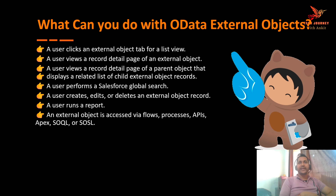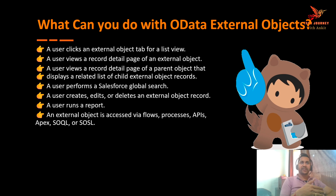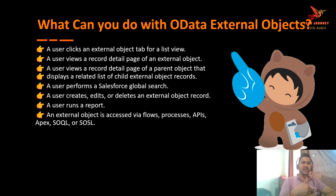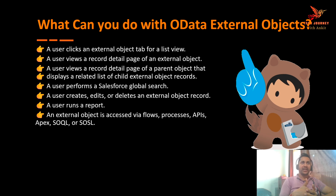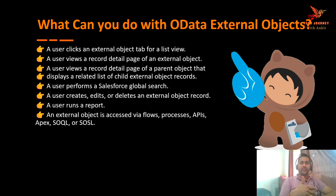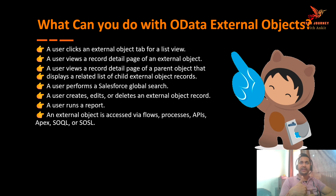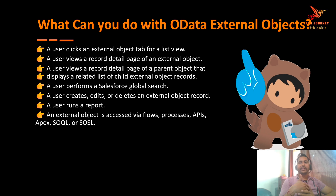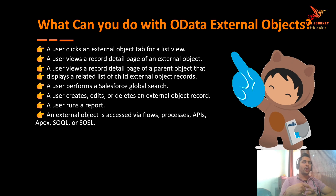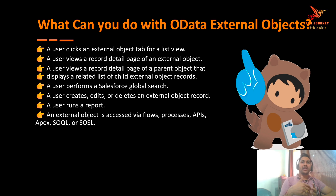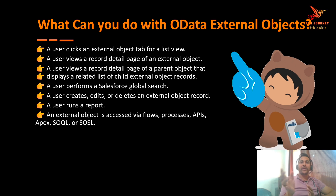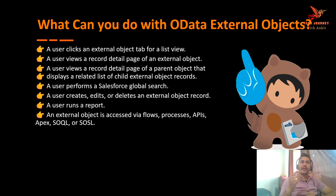What are the different things you can do with OData external objects? Most of the things you can do with custom objects are also possible with OData external objects. You can create a tab for the external object, view the complete record detail page, and perform a global search. You can also view related child records by setting up relationships between external objects. Based on the access you have while connecting to the OData database, you can perform create, edit, and delete operations from the Salesforce org without leaving.